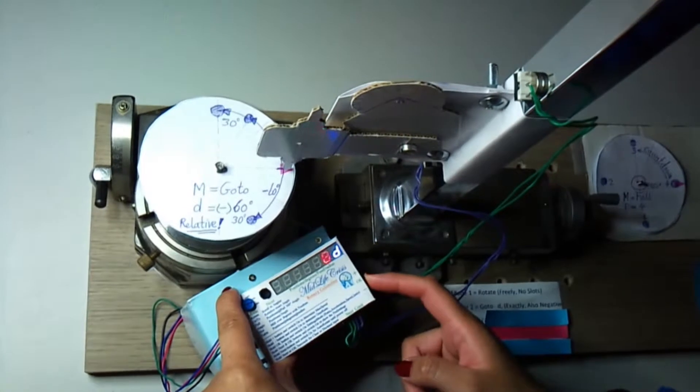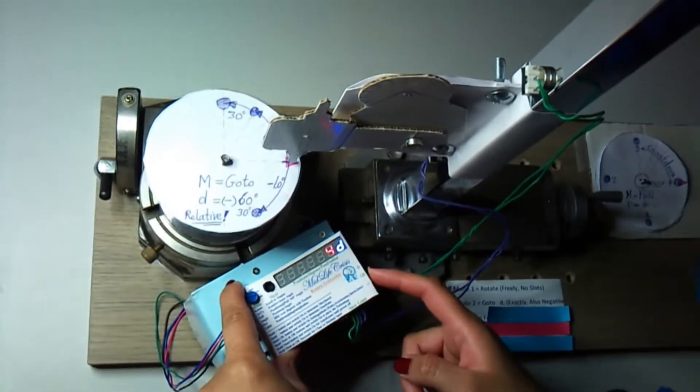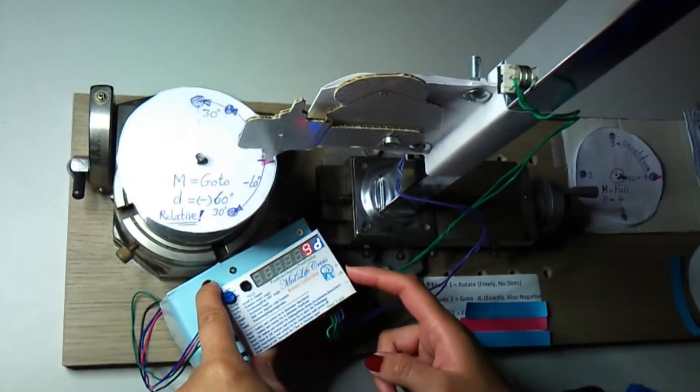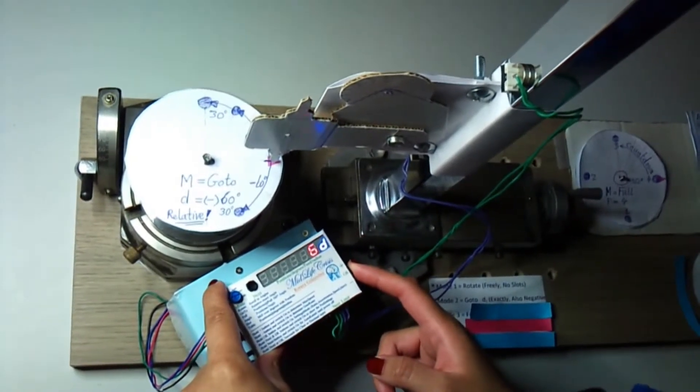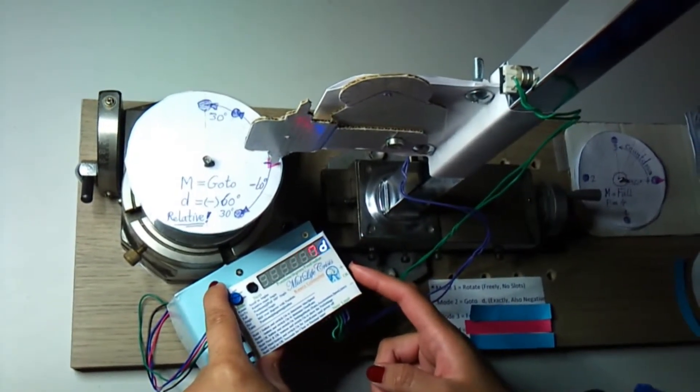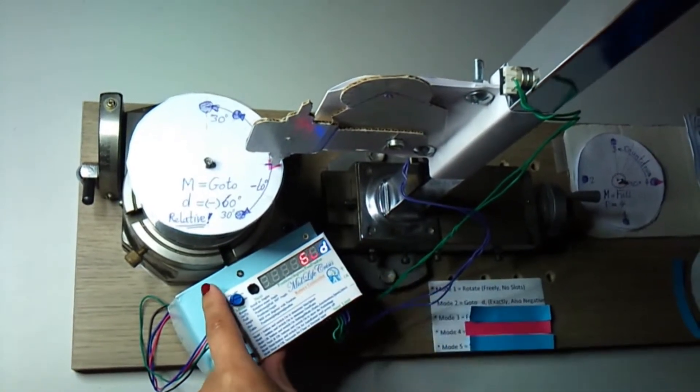Moving up the navigation switch will increase the number. Moving down will decrease the number. We enter 6 by pressing OK and accept the value by pressing next.